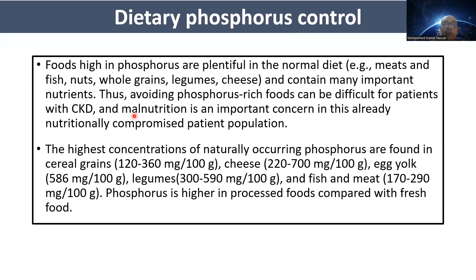Regarding dietary phosphate control, foods high in phosphorus — like meats, fish, nuts, whole grains, legumes, and cheese — are plentiful in the normal diet and contain many important nutrients. Avoiding phosphorus-rich foods can be difficult for CKD patients, and malnutrition is an important concern in this already nutritionally compromised population.